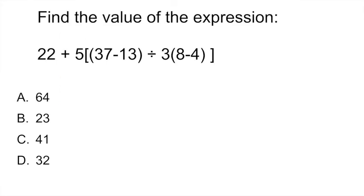So if we go back to our problem, first thing that we have to do are parentheses. So we have to find out what 37 minus 13 is, and we also have to find out what 8 minus 4 is. So we solve the first parentheses. It gives us 24. And then the second parentheses gives us 4.